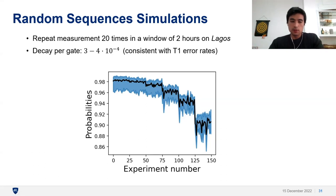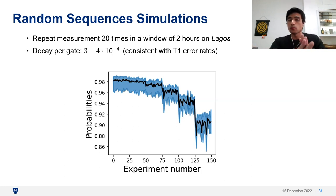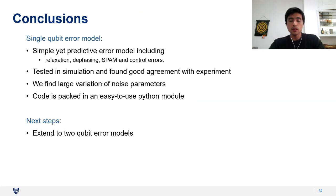The findings suggest that the quantum experience has a significant amount of noise fluctuation. If we need highly accurate computations, such as for probabilistic error cancellation or error mitigation, we may need to perform characterization more often than the default IBM calibration intervals. To conclude: we developed a single qubit error model with just four noise parameters — relaxation, dephasing, SPAM, and control errors — that has high predictive power and very good agreement with experiment.